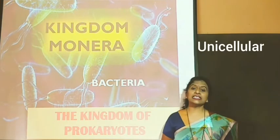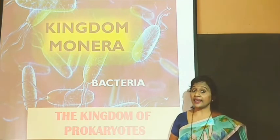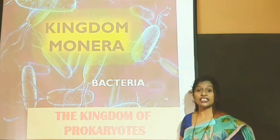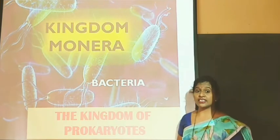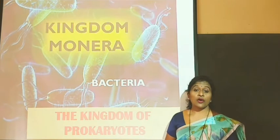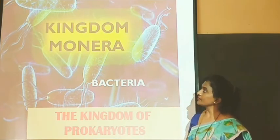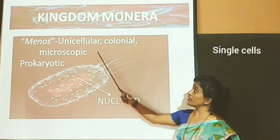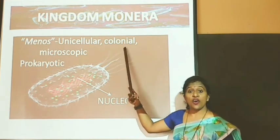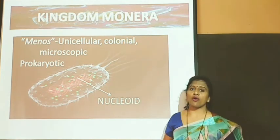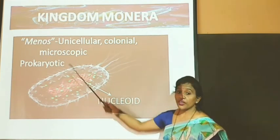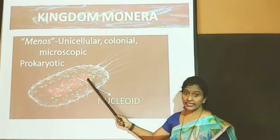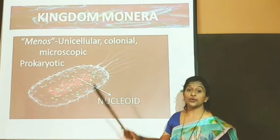They are all unicellular organisms and they are microscopic in nature. Through our naked eye we cannot see these organisms. We will see each and every feature of these Monerans. 'Monera' means single unit, so therefore they are unicellular. But these organisms can also be present in the form of a colony. Prokaryotic — we have discussed already that the genetic material is naked here and it is not surrounded by a nuclear membrane.